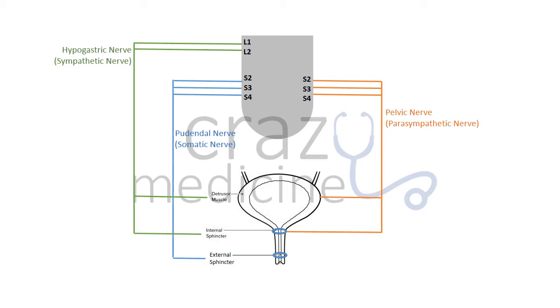The last is the pudendal nerve, which is somatic in nature. It is the only nerve which innervates the external sphincter. The functions of all nerves are discussed in later slides.